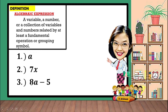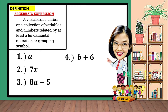Another example: 8a minus 5. This is an algebraic expression because there are operations in here — multiplication and subtraction — because it is read as the product of 8 and a. For number 4, say we have b plus 6. The operation in here is addition, so it is also considered as an algebraic expression.